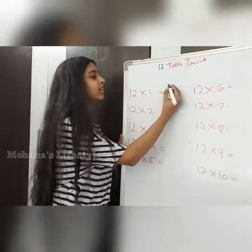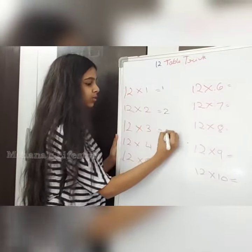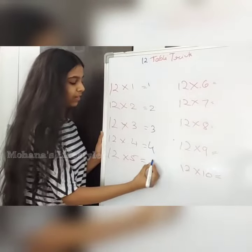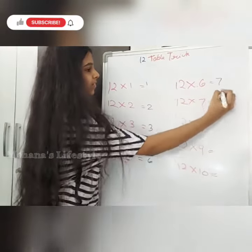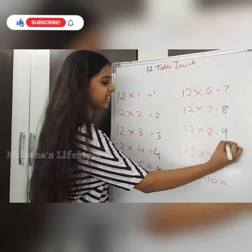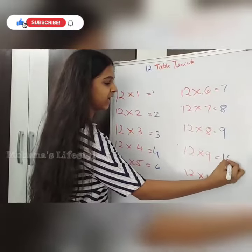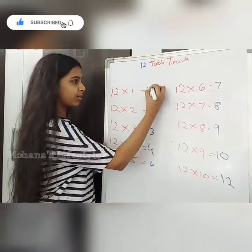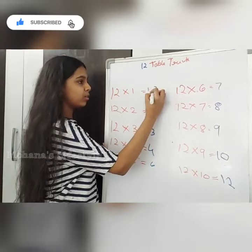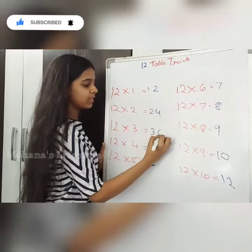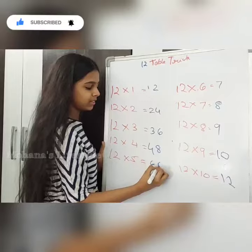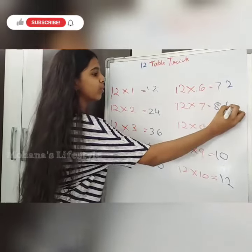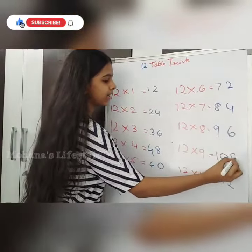For table number 12, you are going to write 1, 2, 3, and 4, then skip 5, and write 6, 7, 8, 9, 10, skip 11, and write 12. Now you are going to write 2, 4, 6, 8, and 0 — and again write 2, 4, 6, 8, and 0.